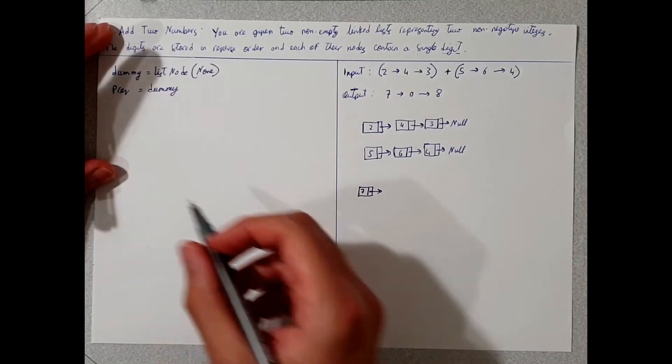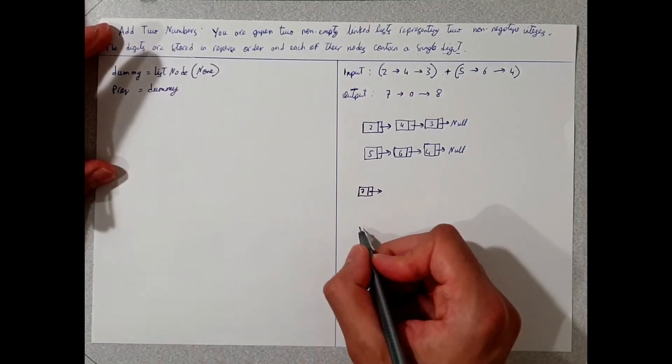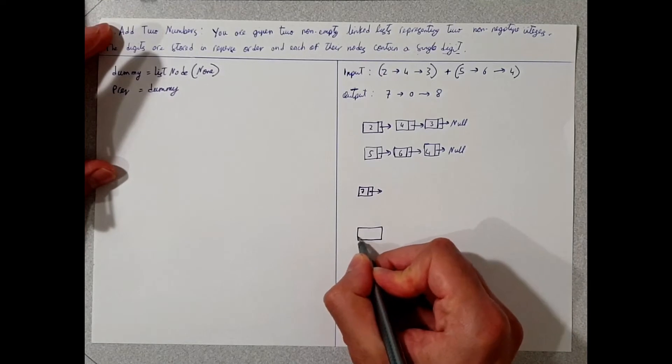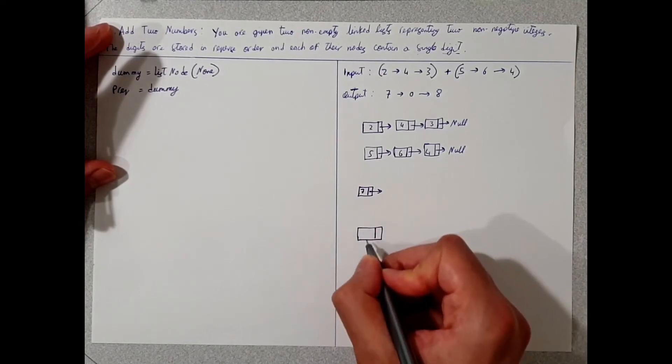and it points at this dummy list node. So if we can imagine this, we have now created a list node that has none and it has a pointer on it.